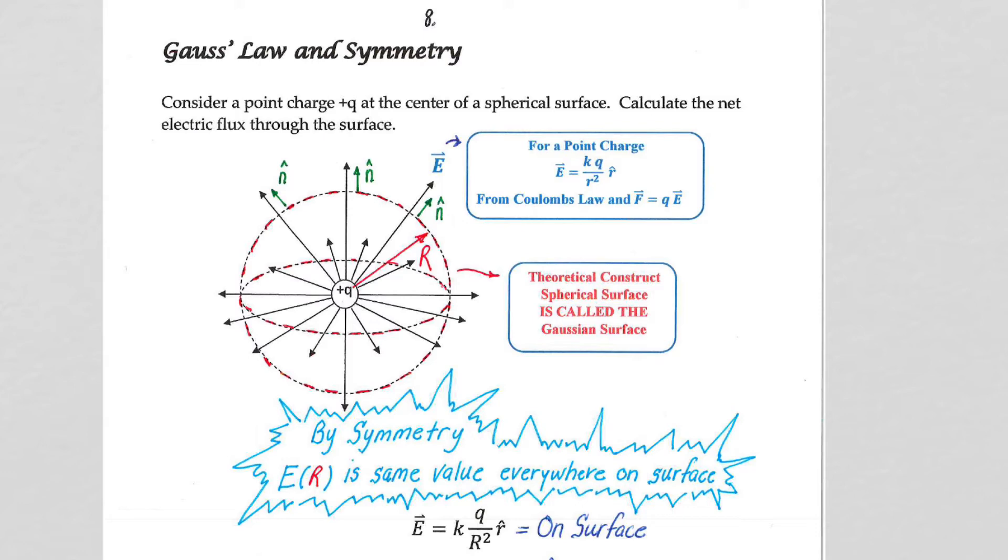Just to make sure we all have the same perspective, we have our point charge plus Q here at the center. We know from Coulomb's law, F equals QE, that the electric field points radially out and is given by KQ on R squared.